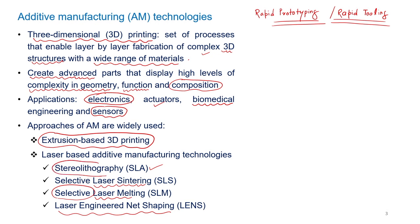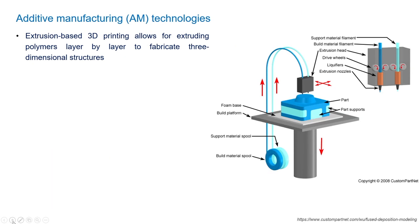Let us first look at stereolithography in our coming slides. Before that, I would like to have a fundamental discussion on the most popular technique — extrusion-based 3D printing. It is a very simple and basic process, allowing for extrusion of polymers that are then deposited layer by layer to fabricate 3-dimensional structures. Polymers are extruded through a nozzle and deposited in a certain format to develop the 3D structure.